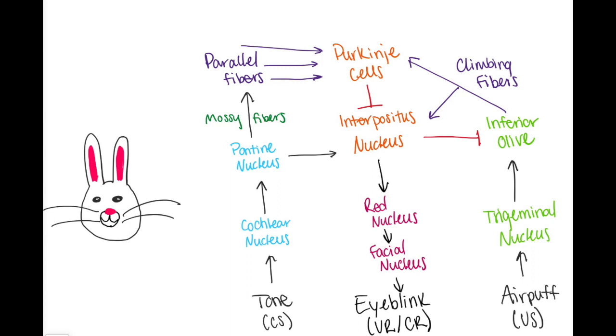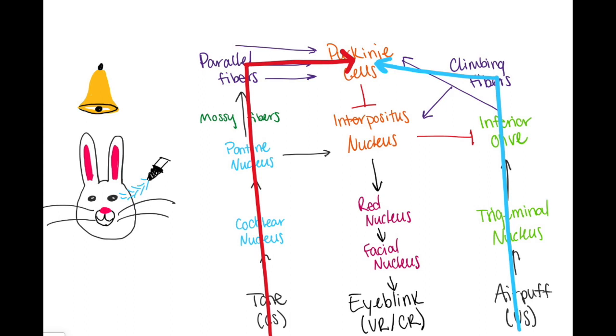In eye blink conditioning, a rabbit is exposed to a tone as the CS and an air puff to the eye shortly after as the US.